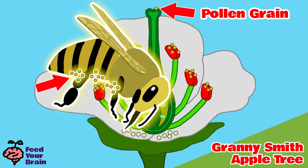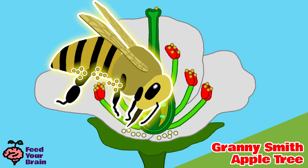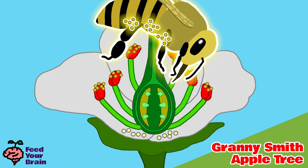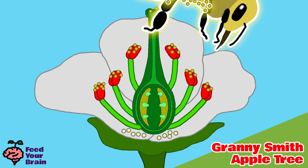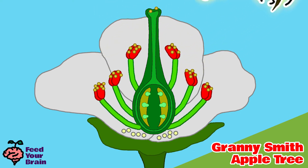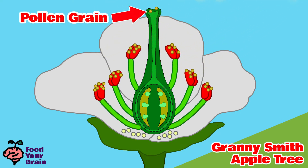The honeybee is feeding off the nectar at the bottom of the flower petals. Once done, it lifts off and flies away to another flower blossom. As it flew off, it left another pollen grain from the red delicious apple flower blossom, which is now also stuck on the top of the pistil at the stigma.